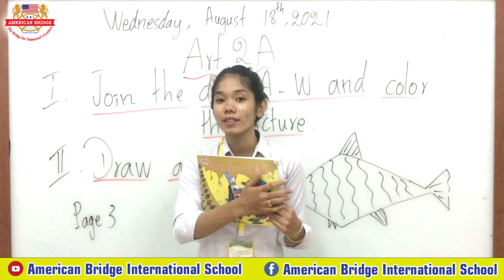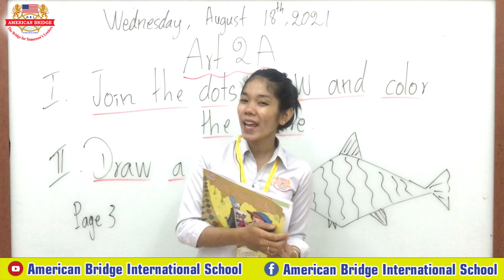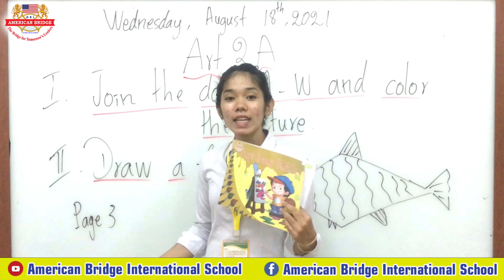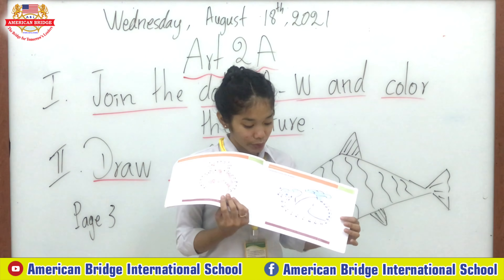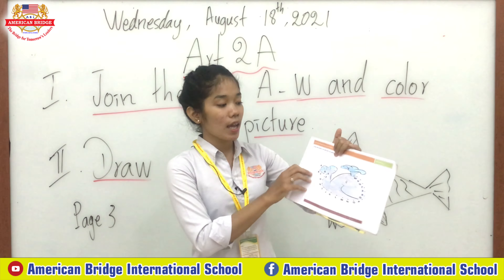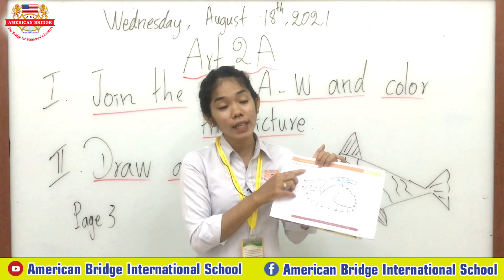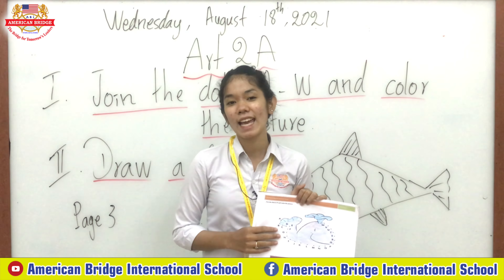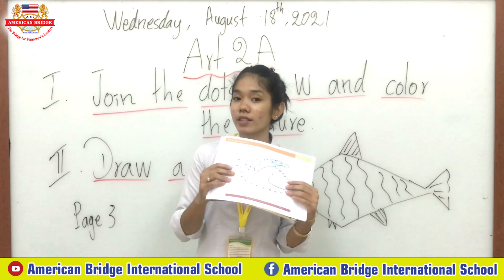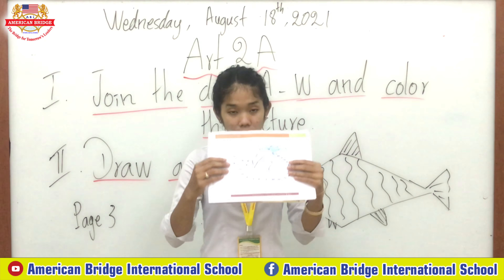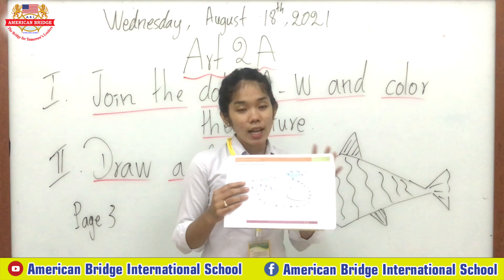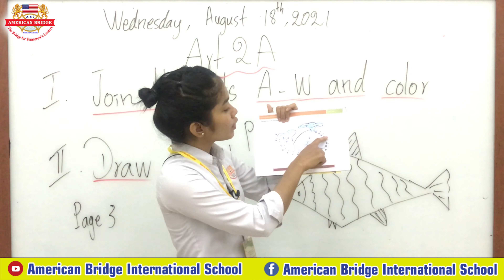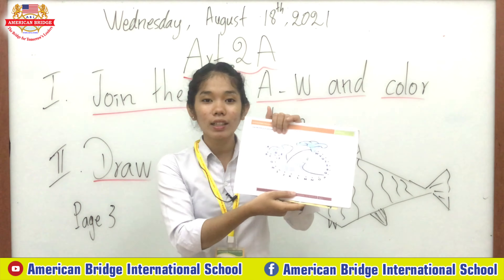Get out your r2a and open it. Everyone, go to join the dot from A to W on the picture, then color the picture. The first task you have to do is open your book on page three, and then join the dot from A to W.